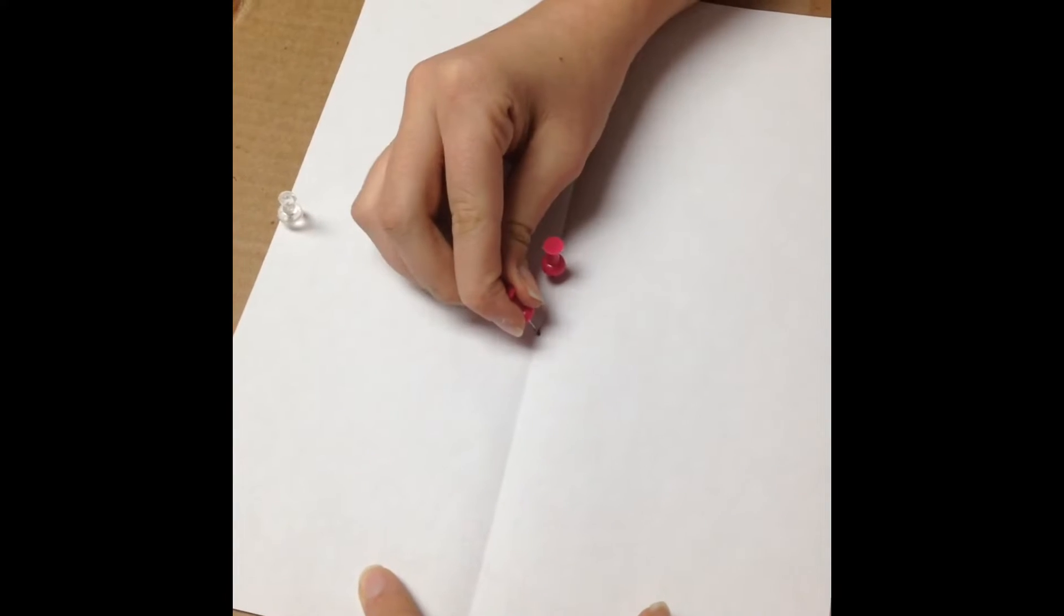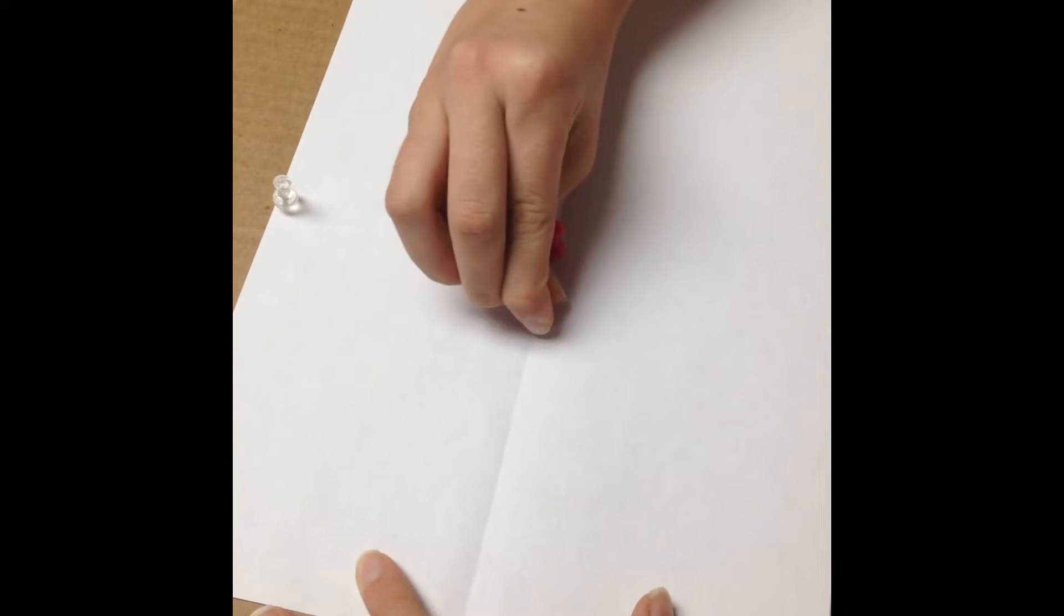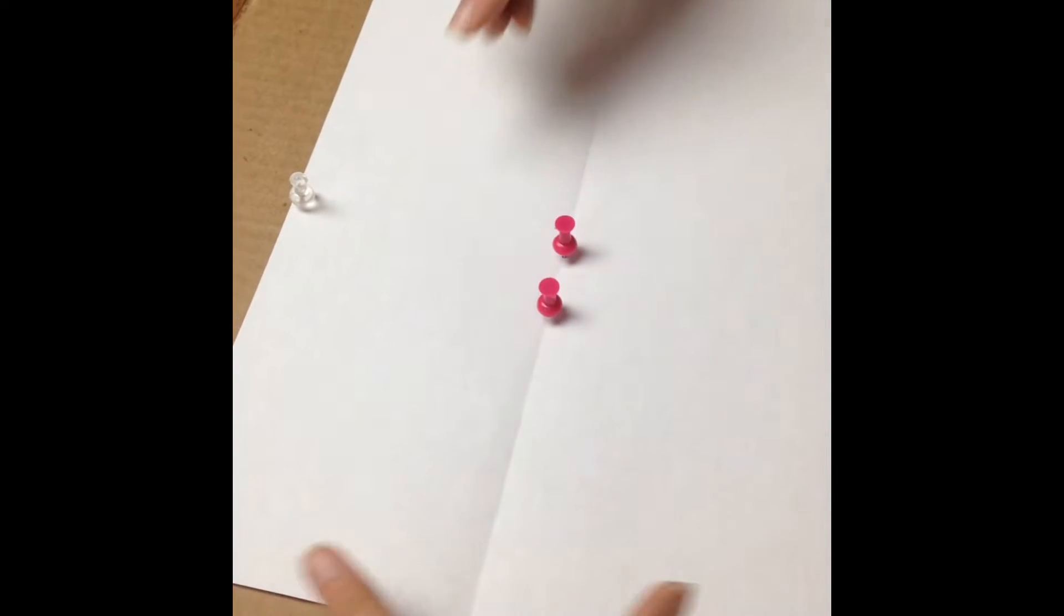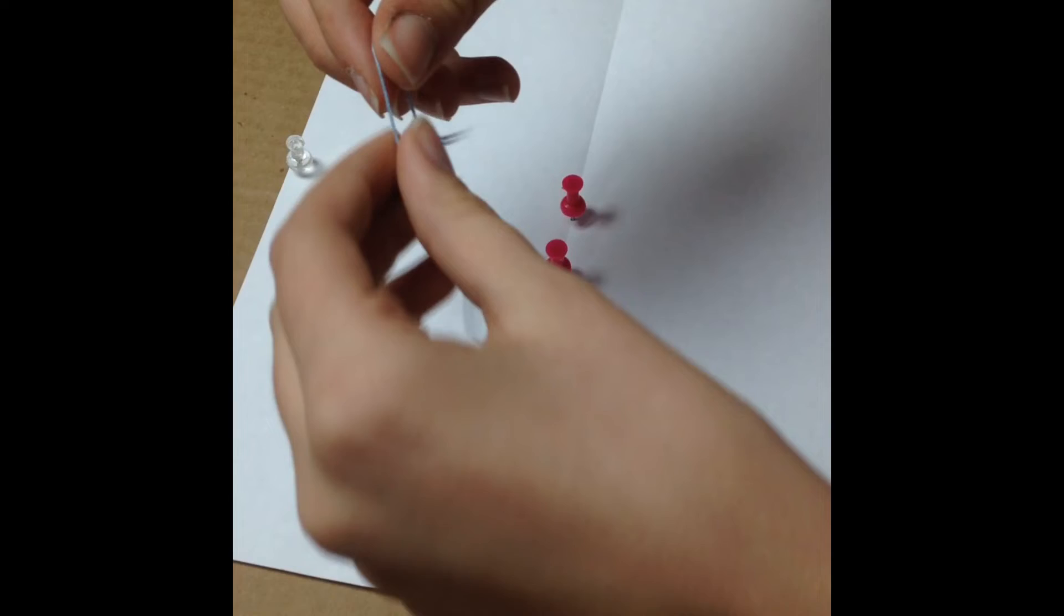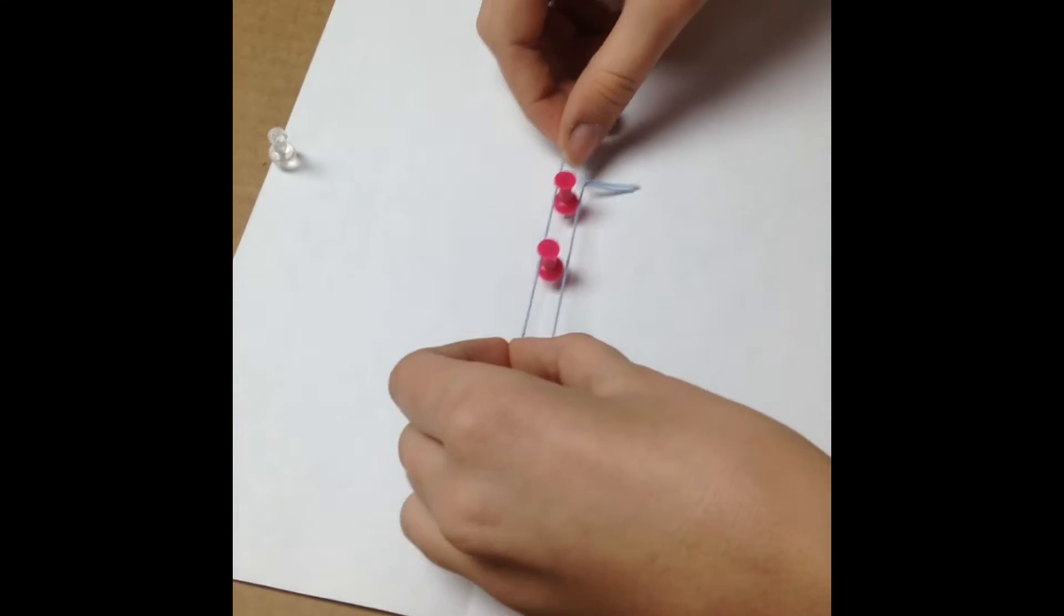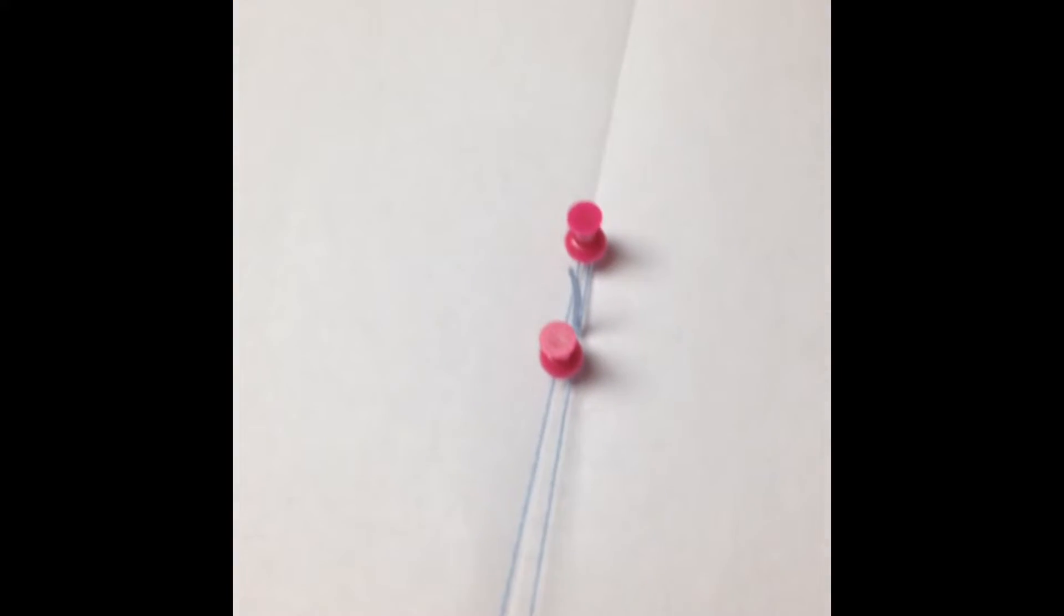After we have drawn the two foci 2.5 centimeters apart I am taking two pushpins and I am placing them directly on the foci. Next, I am going to take the 20 centimeter long string and wrap it around the pushpins.